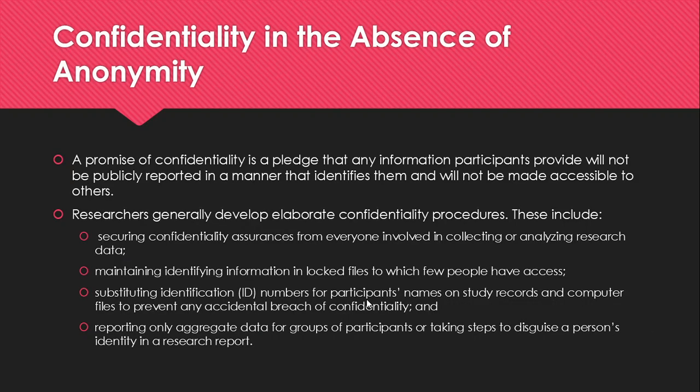Confidentiality in the absence of anonymity: when anonymity is impossible, appropriate confidentiality procedures need to be implemented. A promise of confidentiality is a pledge that any information participants provide will not be publicly reported in a manner that identifies them and will not be made accessible to others. Researchers generally develop elaborate confidentiality procedures. This includes securing confidentiality assurances from everyone involved in collecting or analyzing data; maintaining identifying information in locked files to which few people have access; substituting ID numbers for participants' names on study records and computer files to prevent accidental breaches of confidentiality; and reporting only aggregate data for groups of participants or taking steps to disguise a person's identity in a research report.